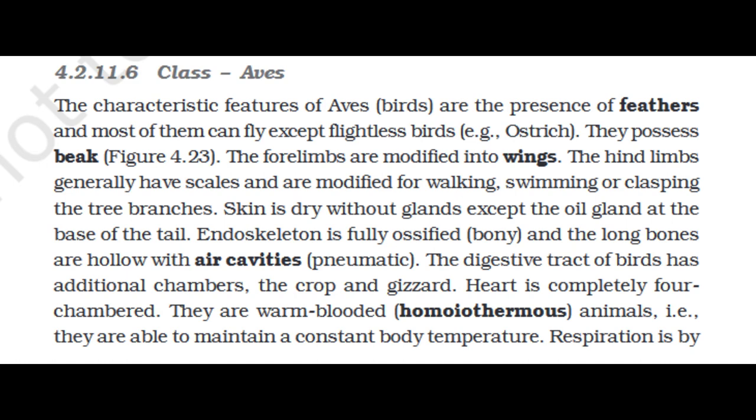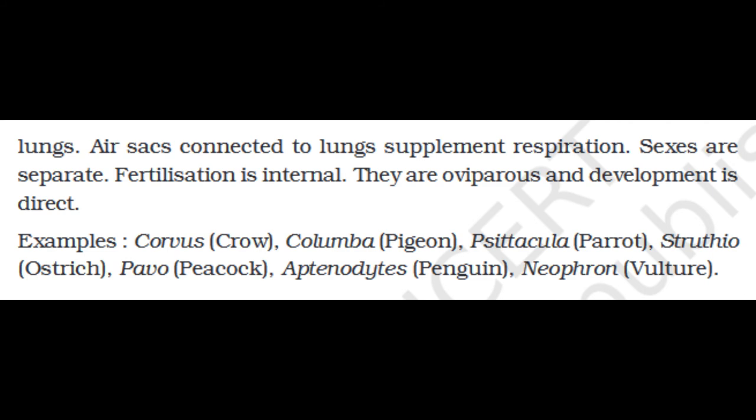Section 4.2.11.6: Class Aves. The characteristic features of aves (birds) are the presence of feathers; most of them can fly except flightless birds like the ostrich. They possess a beak. The forelimbs are modified into wings. The hind limbs generally have scales and are modified for walking, swimming, or clasping tree branches. Skin is dry without glands except for the oil gland at the base of the tail. The skeleton is fully ossified (bony) and the long bones are hollow with pneumatic cavities. The digestive tract of birds has additional chambers — the crop and the gizzard. The heart is completely four-chambered. They are warm-blooded (homoiothermic) — able to maintain a constant body temperature. Respiration is by lungs; air sacs connected to lungs supplement respiration. Sexes are separate; fertilization is internal; they are oviparous and development is direct. Examples: Corvus (crow), Columba (pigeon), Psittacula (parrot), Struthio (ostrich), Pavo (peacock), Aptenodytes (penguin), Neophron (vulture).